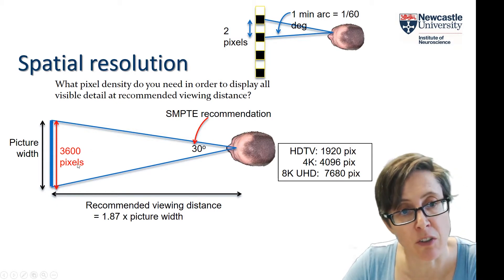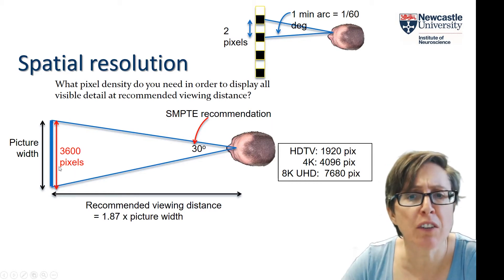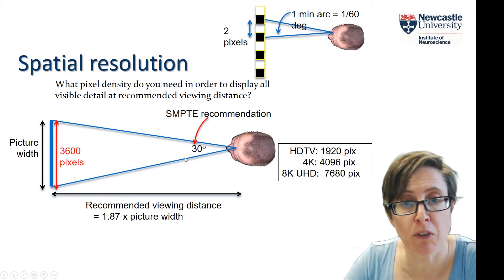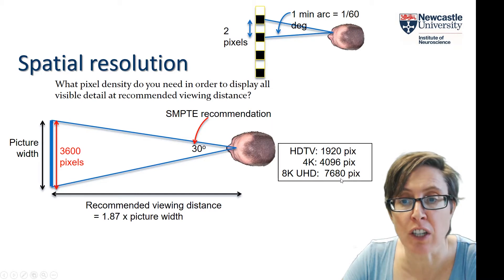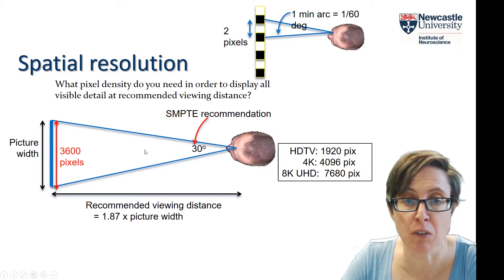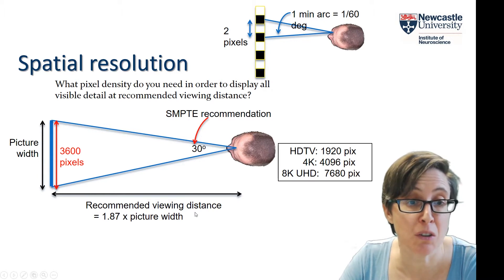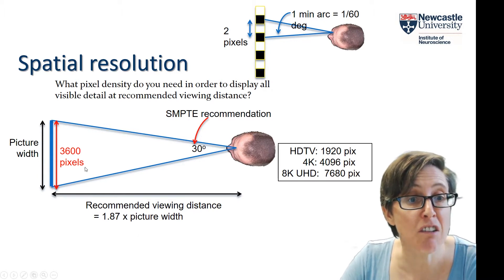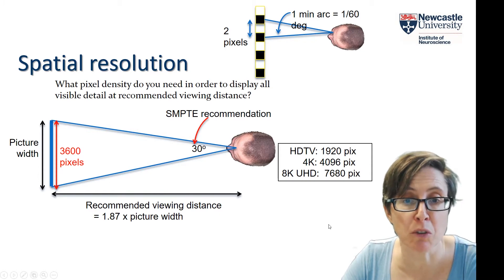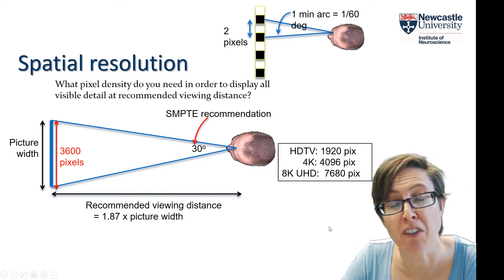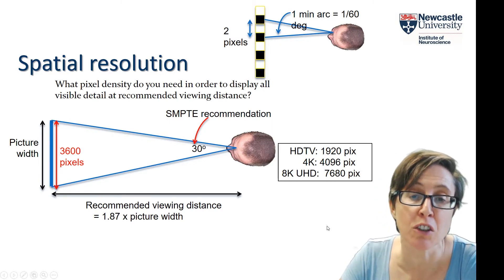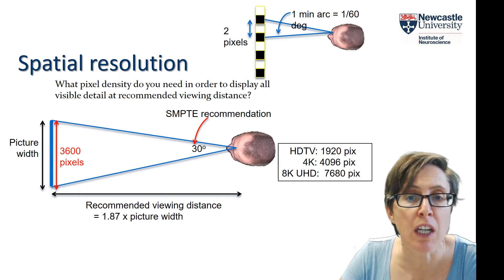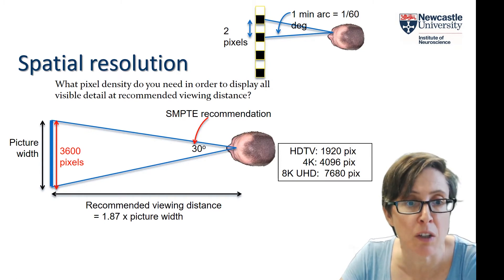It is worth buying a 4K television — it will display beautiful detail which your visual system will be able to detect, and you'll appreciate the enhanced image. But is it worth paying extra for 8K UHD? That would be 7680 pixels across the screen, and there's really no point, because the increased level of detail is not something you're going to be able to see from a typical viewing distance. That's an example of how vision science and the contrast sensitivity function can give principled answers to display-type questions.